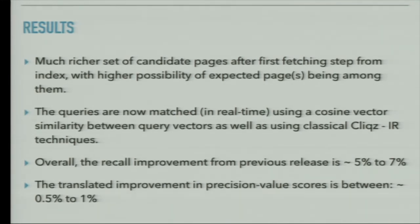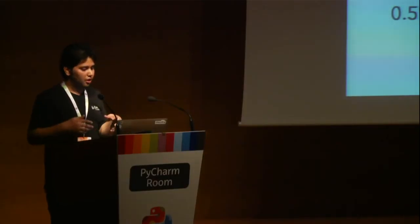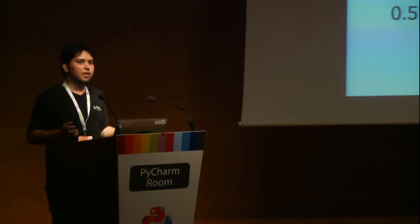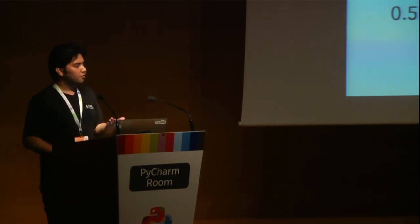The results are impressive — we get a much richer set of candidate pages after the first fetching step, with a higher probability of finding expected pages. We go beyond synonyms and fuzzy matching, using semantically learned vectors. There's a recall improvement of 5 to 7 percent over the previous release in internal tests. The translated improvement in final top three results is around 1 percent. The system triggers only for queries we have never seen before — for known queries like 'FB' or 'Google', we already confidently land on the right page, but for new unseen queries, this technique helps significantly.